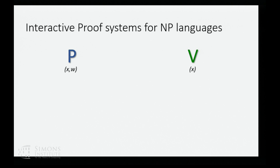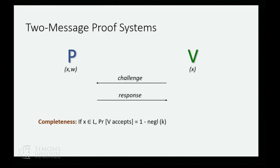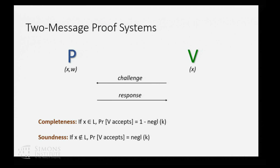I'm going to focus on interactive proofs for NP languages in this talk, where the prover has input an instance and a witness, and the verifier has input an instance, and the prover wants to convince the verifier that this instance is in the language. I want to focus on the two-message setting. The standard properties we want are completeness — if X is in the language and the prover behaves honestly, the verifier should accept — and soundness, which says that if X is not in the language, then no matter what the prover does, the verifier should reject the proof with overwhelming probability.